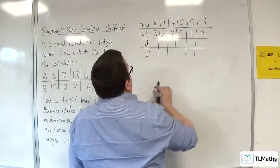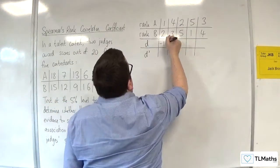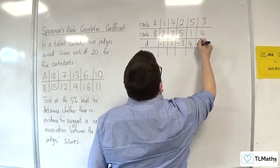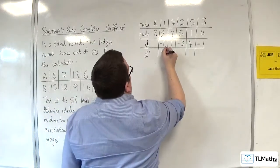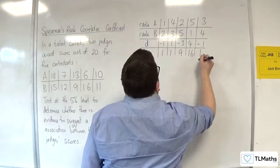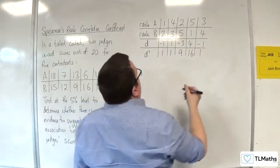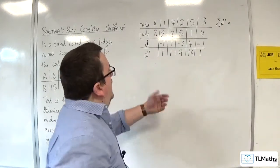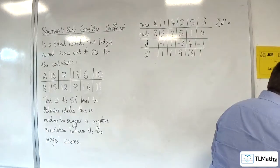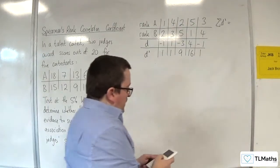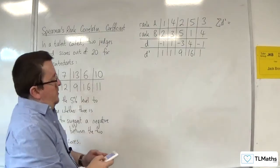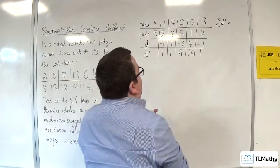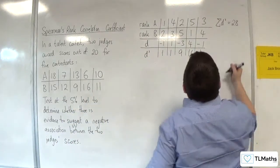So, then we find the difference in the ranks. So, 1 take away 2 is minus 1, 4 take away 3 is 1, 2 take away 5 is minus 3, 5 take away 1 is 4, 3 take away 4 is minus 1. So, we then square those: 1, 1, 9, 16, 1. And so, the sum of d squared. So, what have we got? We've got 10, 26, 27, 28. Okay, so it's 28.